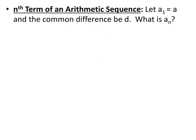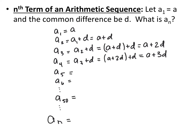To find the nth term or explicit formula for an arithmetic sequence with first term a and common difference d, we can use the recursive formula to build it out. a sub 1 is a, a sub 2 is a plus d, a sub 3 is a plus 2d, a sub 4 is a plus 3d. Expand out a sub 5 and a sub 6, see if you can predict a sub 50, and try to write a general formula.